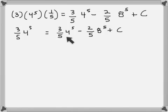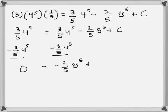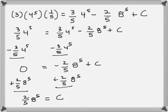First, I'm going to subtract (3/5)(4^5) from both sides. When I do that, I get 0 on the left side and -(2/5)(8^5) + C on the right. Then I'll add (2/5)(8^5) to both sides, which gives me C = (2/5)(8^5).